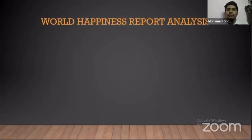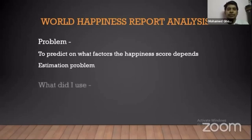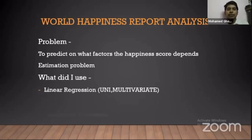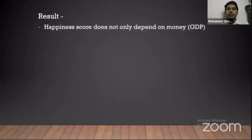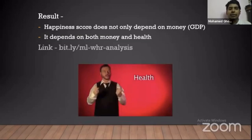First, I'll talk about my first capstone project, which was a World Happiness Report analysis. The problem was to predict what factors the happiness score of any country depends on — it was an estimation problem. I used linear regression and polynomial regression. The result was that the happiness score of any country does not depend only on money; it also depends on health. You can check out this project via the link I've shown.